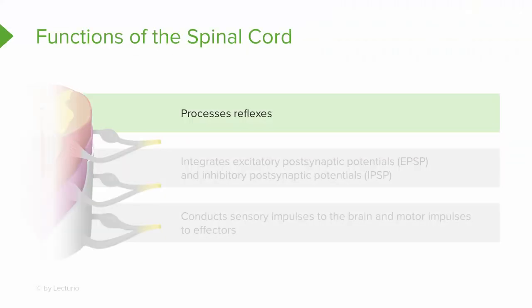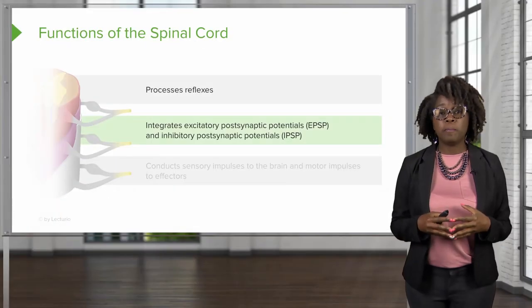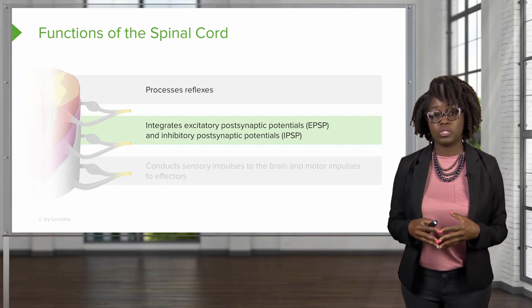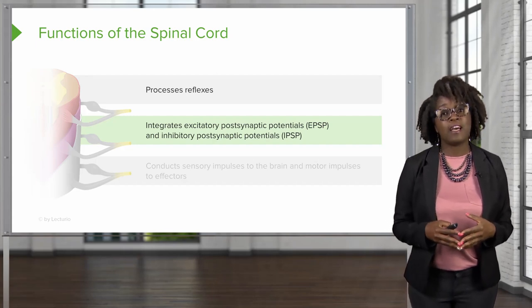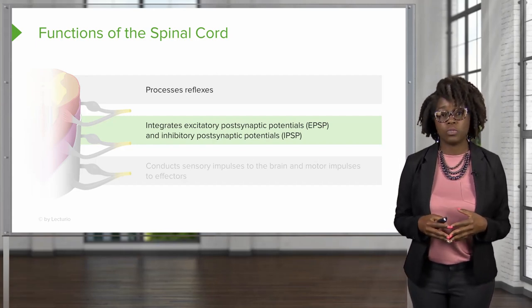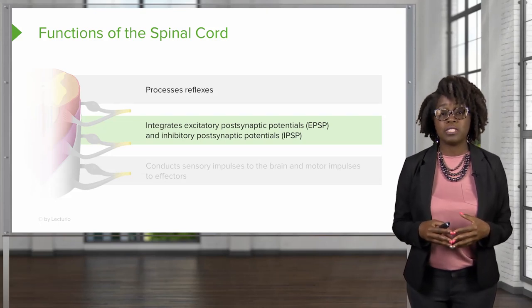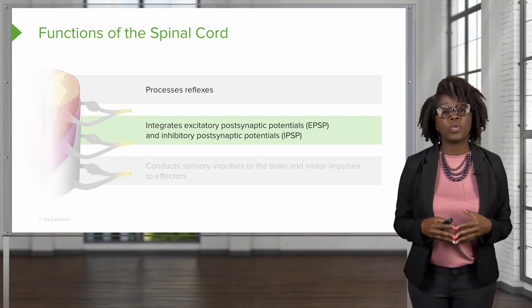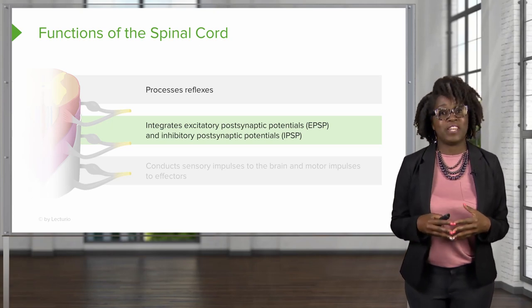The first function of the spinal cord is to process reflexes. Another function is to integrate excitatory postsynaptic potentials, or EPSPs, and inhibitory postsynaptic potentials, or IPSPs. EPSPs are depolarizing potentials and IPSPs are hyperpolarizing potentials, and the summation of these postsynaptic signals determines whether a nerve impulse is generated or not.